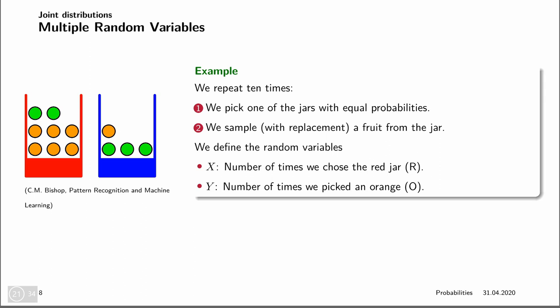Often we don't have a single random variable but multiple random variables. For example, if we think of a supervised learning scenario, x and y are random variables, and our training dataset yields values of x and y at the same time, so we always get pairs. Or consider this example where we have two jars — a red jar and a blue jar. We do the following experiment: we pick with equal probability, so probability 0.5, the red jar and with probability 0.5 the blue jar. Then, once we have picked our jar, we sample from that jar with replacement a fruit — these jars have oranges and apples.